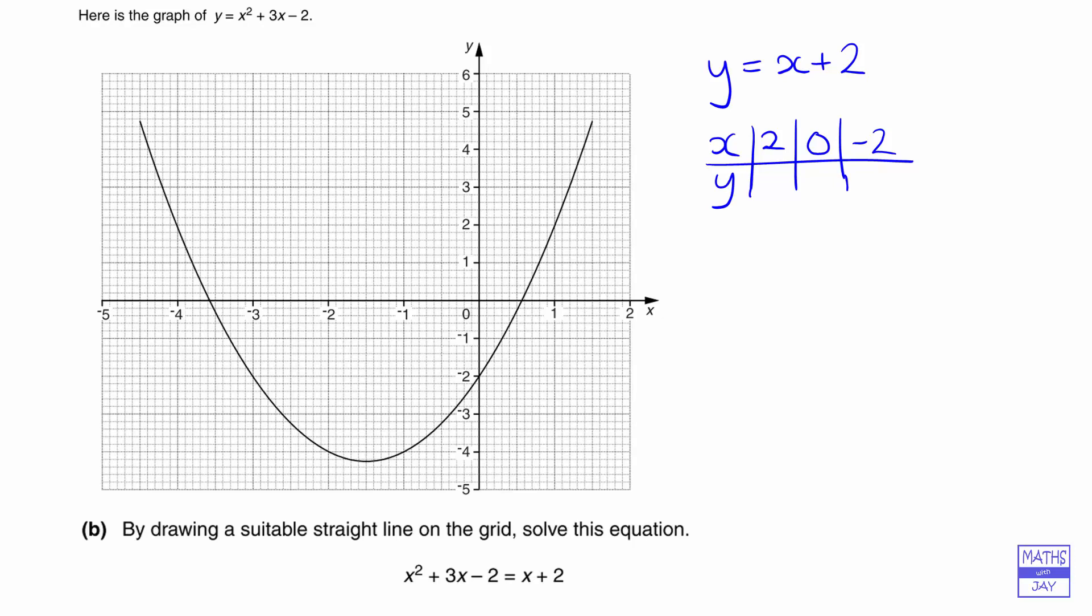So all we're doing is adding 2 to each of those values. So when x is 2, y is 4. When it's 0, y is 2. And when x is minus 2, then y is equal to 0. So that gives us three points to plot.